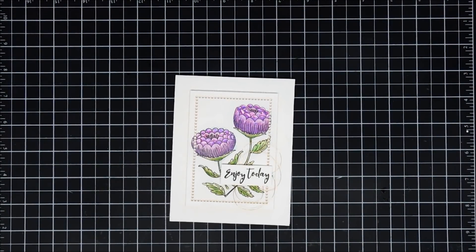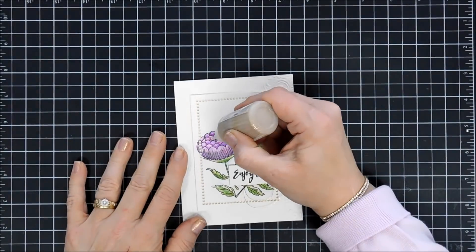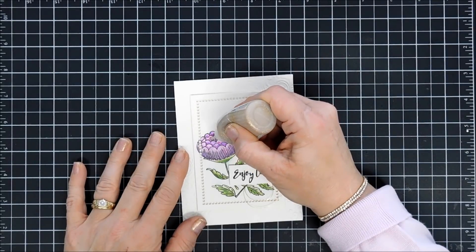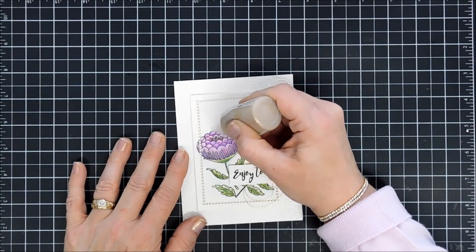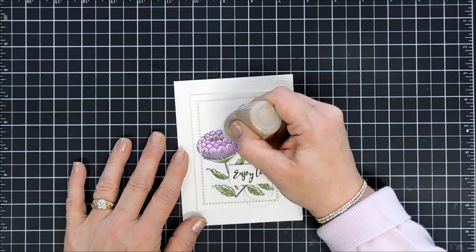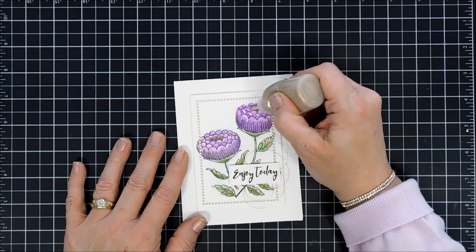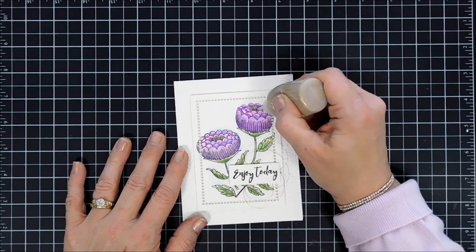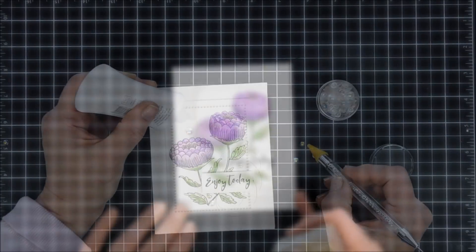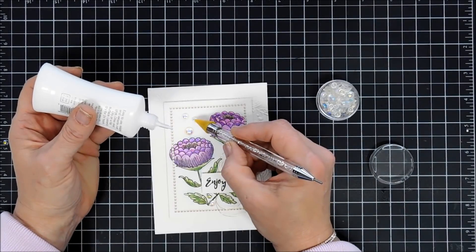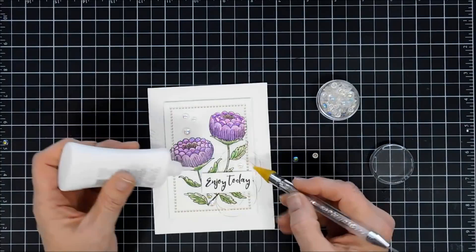For the center of my flowers, I'm going to add some Nouveau Glitter Drops. These are honey gold, and I'm just going to dot each one of those flower centers and tie in some of that gold wire. And then last but not least, I have some iridescent bubbles. We're going to add a few here and there. And then that completes my card.